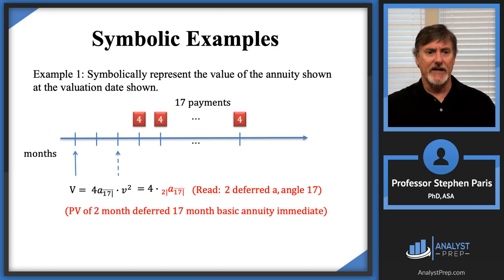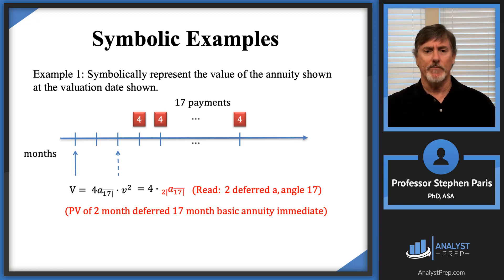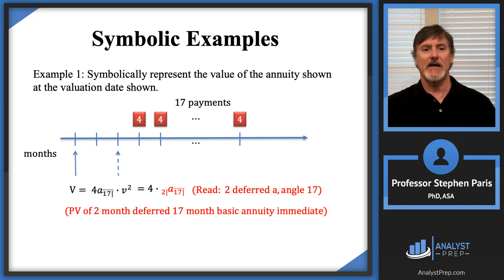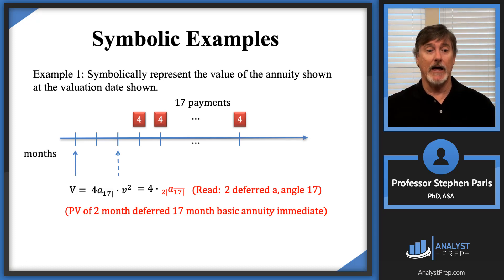What's in red, in words, is the present value of a two-month deferred, 17-month basic annuity-immediate. It's two-month deferred because, thinking of it as an annuity-immediate, the first payment is at the end of the first period, so the begin date is at the dotted line — which is two months after the original valuation date. That's why it's called a two-month deferred, 17-month basic annuity-immediate.